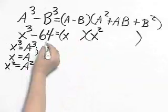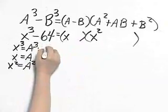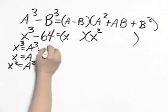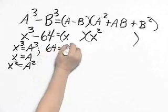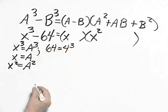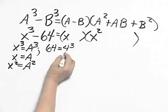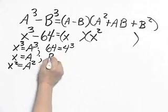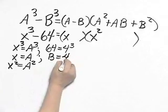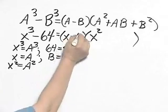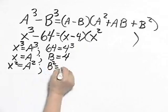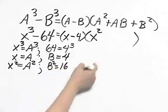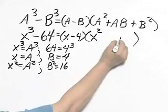If you play with factoring 64, you will find out that 64 is 4 cubed. So for B cubed, we have 4 cubed. Plane B will be plane 4. So there's my minus 4. B squared is 4 squared or 16. The plus B squared is plus 16.